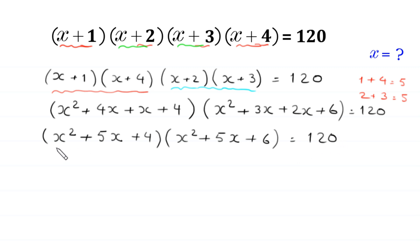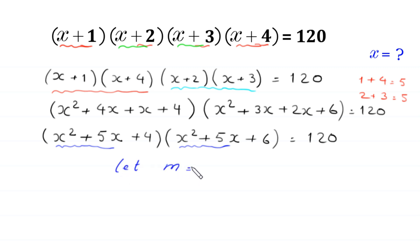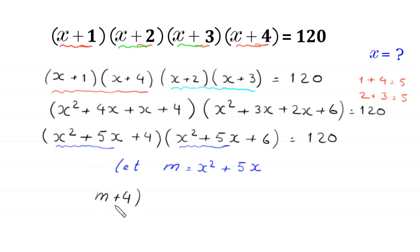Now we notice that both factors contain x²+5x. So we let m = x²+5x, and substitute into the equation. The equation becomes (m+4)(m+6) = 120.